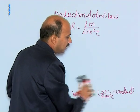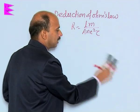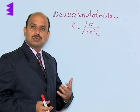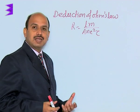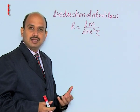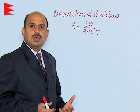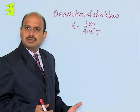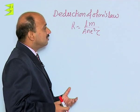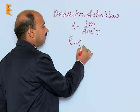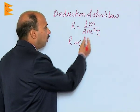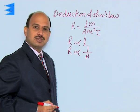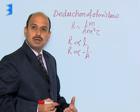The resistance is the property of the conductor by virtue of which it opposes the flow of electrons through it. The main cause of resistance in the conductor is actually the collision of the free electrons, or you can say collision of the moving electrons with their ions or atoms. Resistance is directly proportional to L, the length of the conductor. We can also say resistance is inversely proportional to A, the area of cross section — larger the area of cross section, that means thicker the wire, less is the resistance.